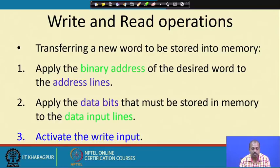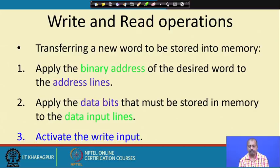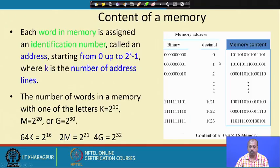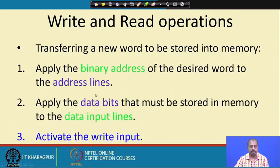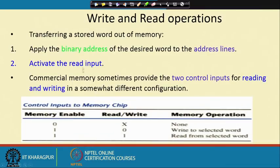For a write operation — to transfer a new word to be stored into memory — we apply the binary address of the desired word to the address lines, apply the data bits to the data input lines, and activate the write input. So we give the address, give the data value, and keep the write control signal active while the read control signal is not activated. For a read operation — transferring a stored word out of memory — we apply the binary address to the address lines and activate the read input, and then the content will be available on the data output lines.